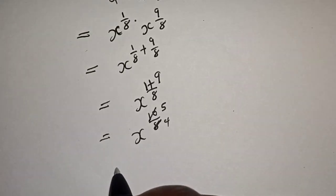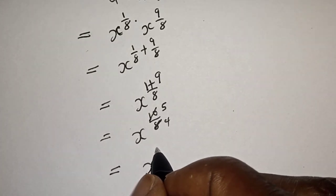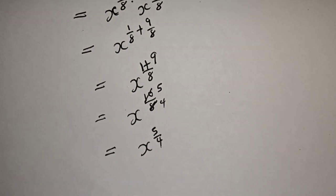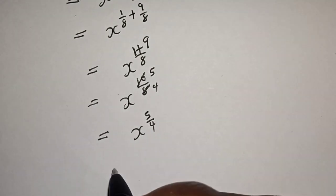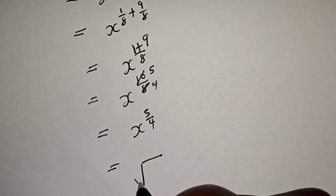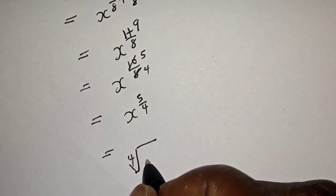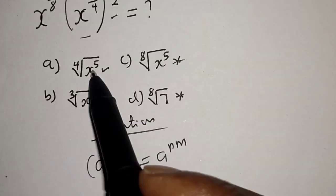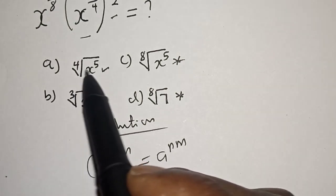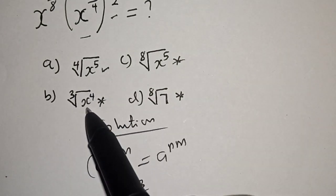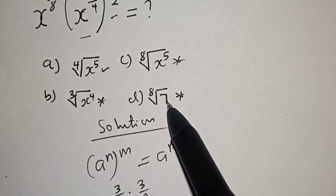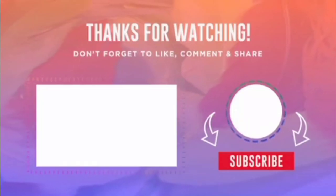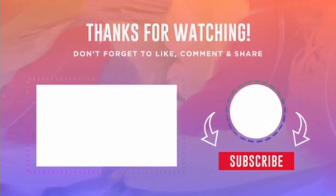This is equal to s raised to the power 5 over 4. We know that s raised to the power 5 over 4 can be written as the 4th root of s raised to the power 5. That is our final answer. Looking at the options, the correct answer is option A: 4th root of s raised to the power 5. The other options are all wrong. If you enjoyed the class, please don't forget to like, share, comment, and subscribe. Thank you.